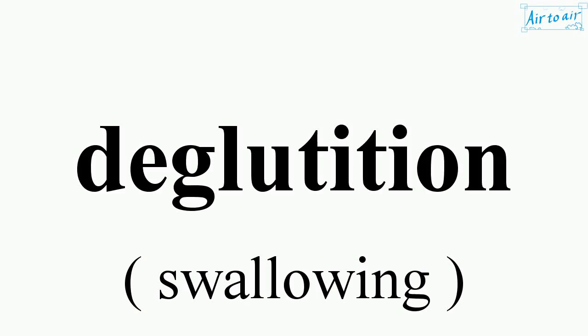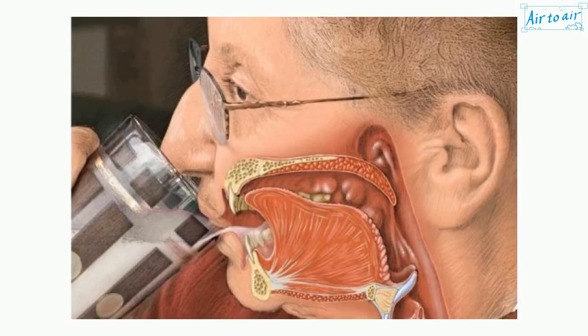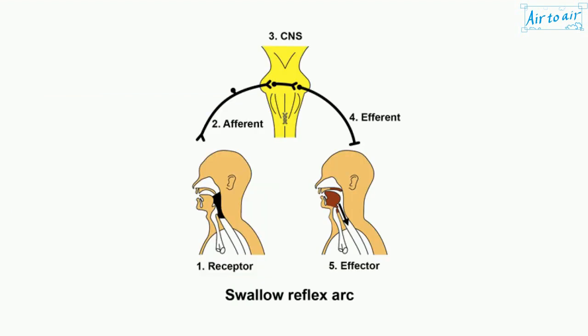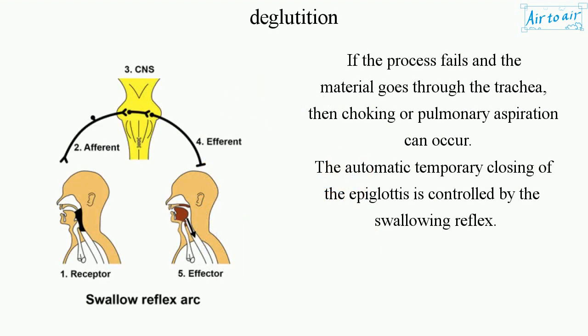Deglutition, or swallowing, is the process that allows a substance or bolus to pass from the mouth to the pharynx and into the esophagus while closing the epiglottis. It is an important part of eating and drinking. If the process fails and material goes through the trachea, choking or pulmonary aspiration can occur. The automatic temporary closing of the epiglottis is controlled by the swallowing reflex.